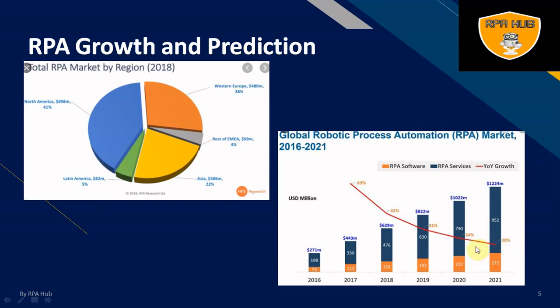As you can see here, the growth rate started from 20 to 24%, then 31, 42, and around 63%. They have predicted the year-on-year growth of the RPA series till 2021 as 67% of the market that the RPA industry will cover.